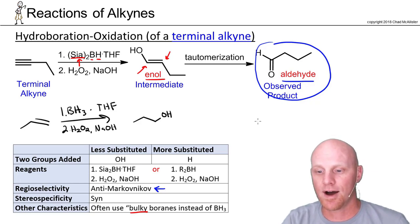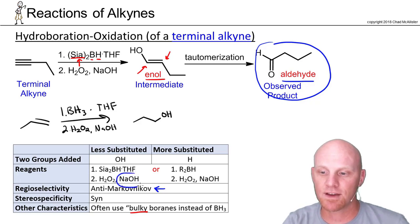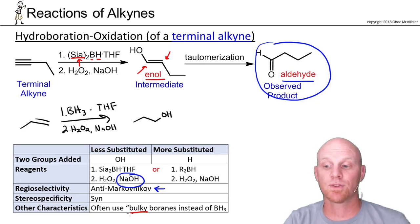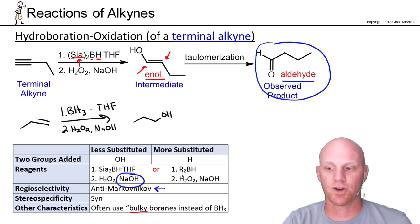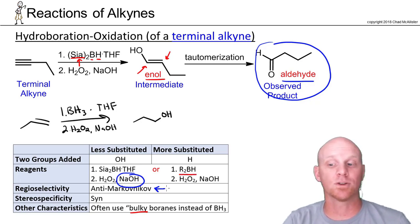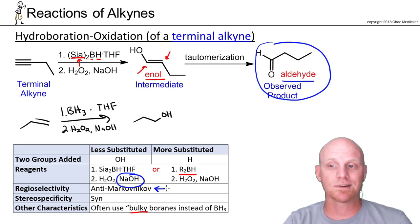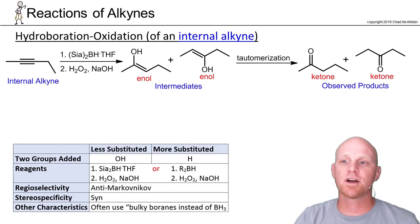After tautomerization, note that this tautomerization happens under basic conditions, whereas the acid-catalyzed hydration tautomerization happens under acidic conditions. The mechanisms are essentially the reverse of each other — something we'll study shortly. In addition to disiamyl borane, you might see this written as R2BH, or with specific R groups like cyclohexyl groups.